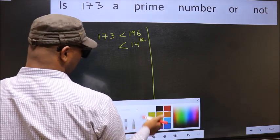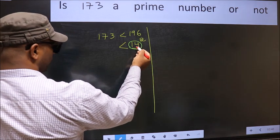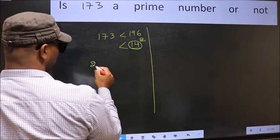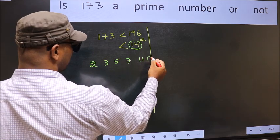Now, you write all the prime numbers less than this number, 14. They are 2, 3, 5, 7, 11, and 13.